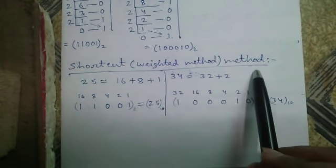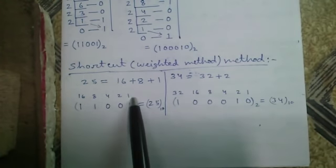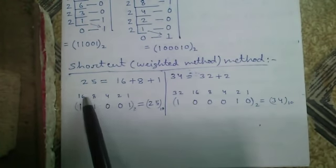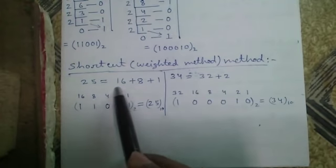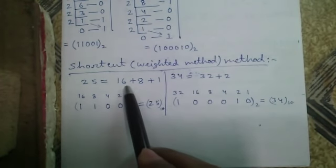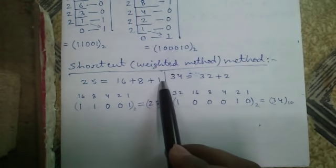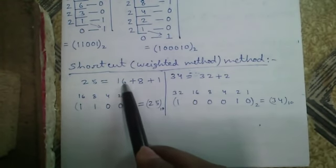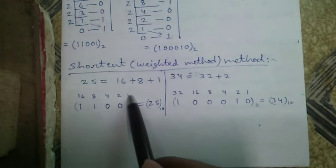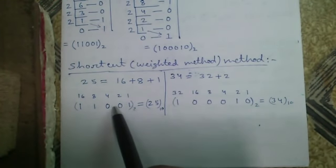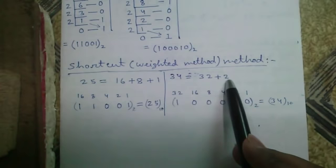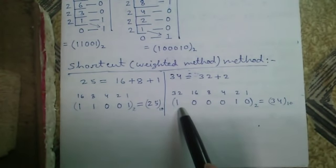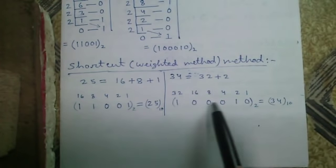Next is the shortcut or weighted method. For that, make a table: 1, 2, 4, 8, 16, 32, 64, and so on — each value doubling. Consider which numbers from this table you need to make 25. We need 16 + 8 + 1, so write 1 below 16, 1 below 8, and 1 below 1. We did not take 4 and 2, so write 0 below them. It becomes 11001. For 34, we need 32 and 2, so write 1 below 32 and 1 below 2, and 0 below other numbers. It becomes 100010.